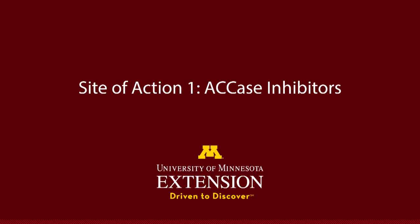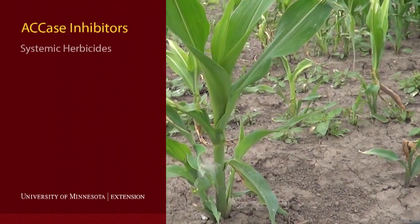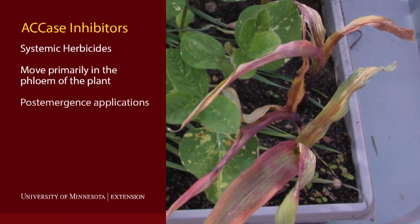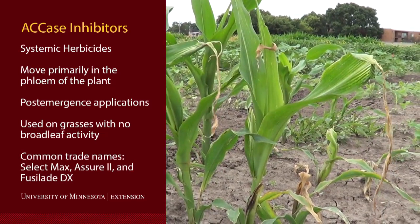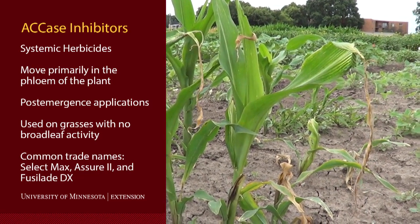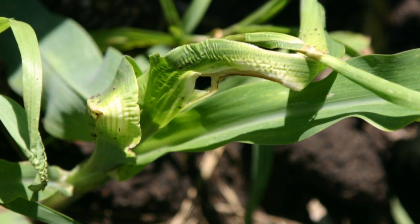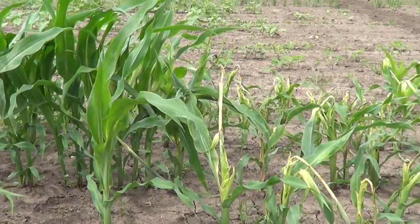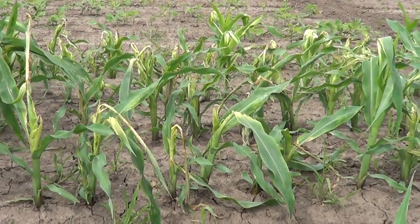Site of action number one herbicides contain three chemical families that act on lipid synthesis. These herbicides are only active on grass plants and inhibit the ACCase enzyme, resulting in injury symptoms to growing points of the plant. Symptoms include yellowing to necrosis of young leaf tissue, and leaves in the whorl of the plant can easily be separated from the rest of the plant after three to five days after application.